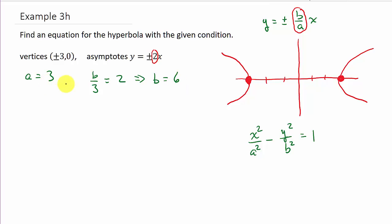And now we've got 3 and we've got 6. We just plug them in. So we get X squared over A squared. Well, A is 3, so that's going to be 3 squared is 9 minus Y squared over, and then B squared. Well, B is 6, so 6 squared is 36, and that equals 1. And there's your answer.